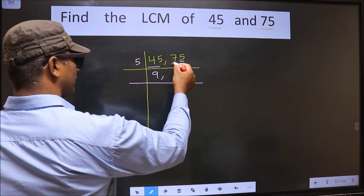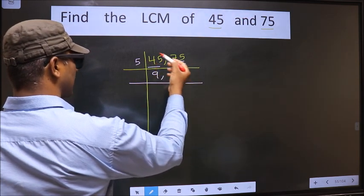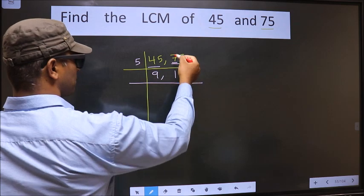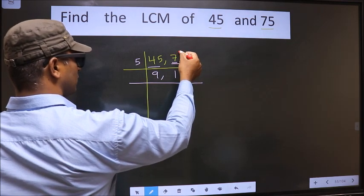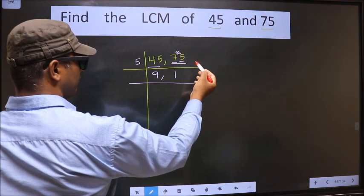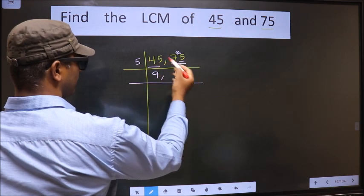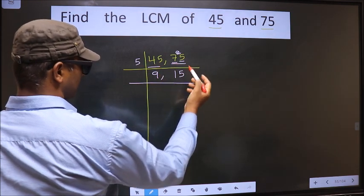The first number is 7. A number close to 7 in the 5 table is 5 nines 5. 7 minus 5 is 2, carried forward making it 25. When do we get 25 in the 5 table? 5 fives are 25.